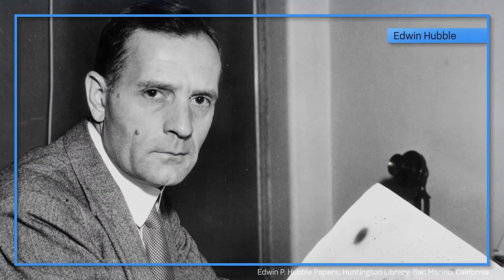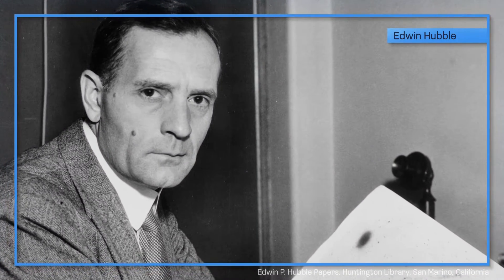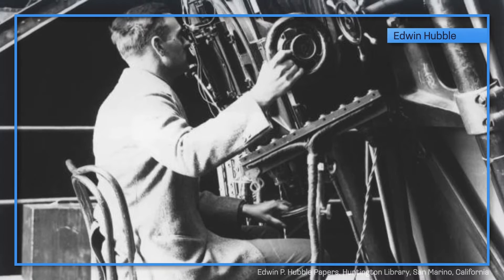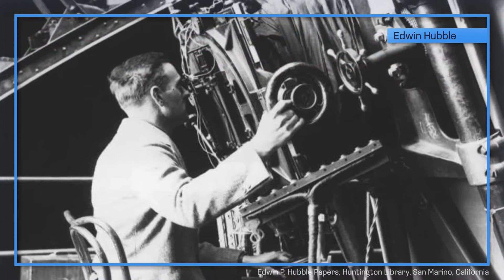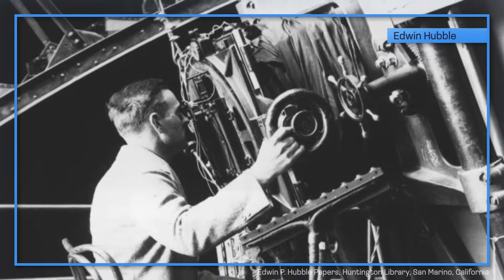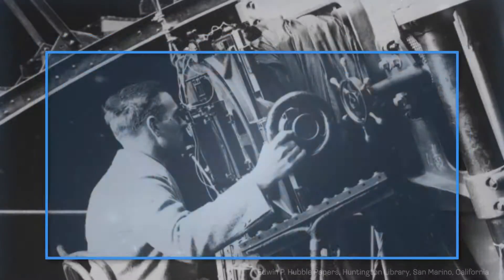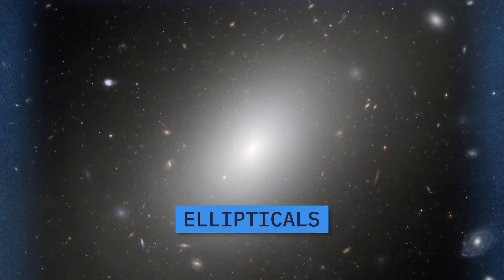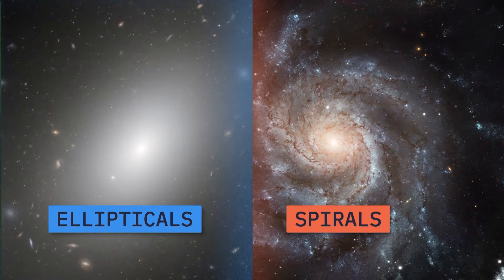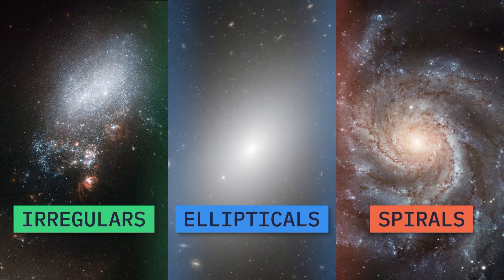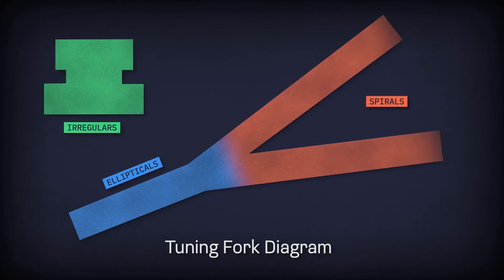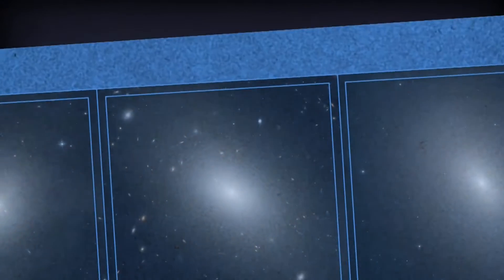Hubble's namesake, astronomer Edwin Hubble, pioneered the study of galaxies based simply on their appearance. He divided galaxies into three basic forms: ellipticals, spirals, and irregulars. Labeled the tuning fork diagram, Edwin Hubble's basic arrangement is still in use today.